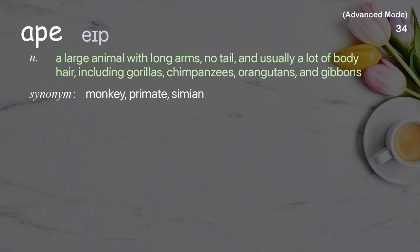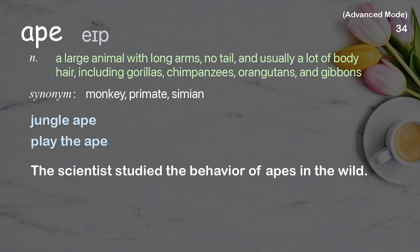Ape: a large animal with long arms, no tail, and usually a lot of body hair, including gorillas, chimpanzees, orangutans, and gibbons. Examples: jungle ape; play the ape. Example sentence: The scientist studied the behavior of apes in the wild.